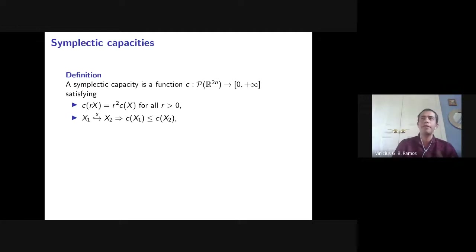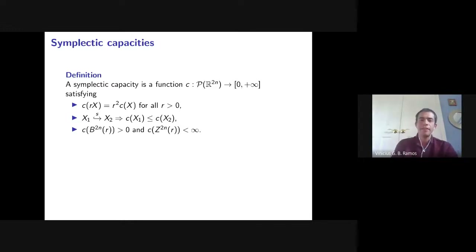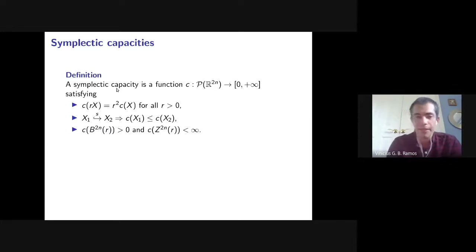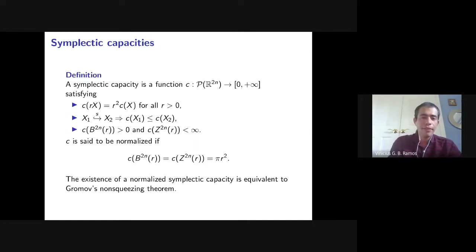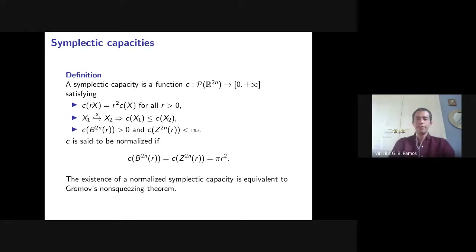Non-triviality conditions require 0 < c(ball) and c(cylinder) < ∞; a capacity is normalized if c(B(R)) = c(Z(R)) = πR². The mere existence of such a function is extremely hard — equivalent to Gromov's non-squeezing theorem. The projection to a two-dimensional plane doesn't work because it depends on which plane you choose, and fixing one plane is not preserved by symplectic transformations.